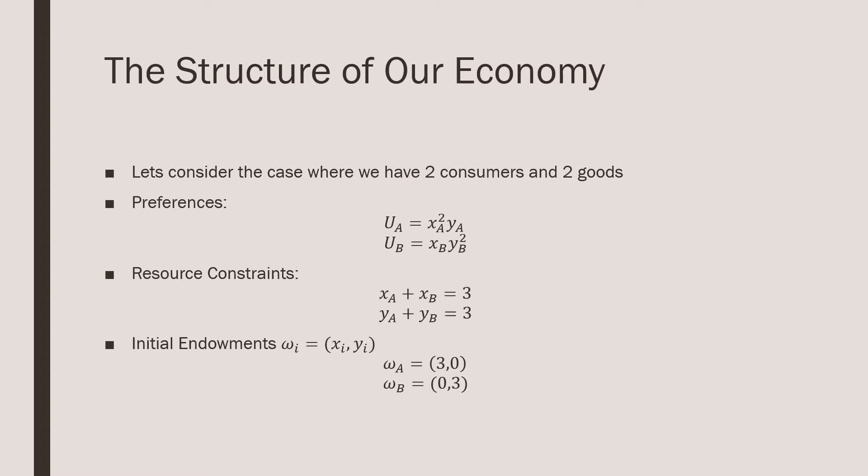Let's consider a standard 2x2 case where we have two consumers and two goods. The preferences of our consumers are given as follows. For consumer A, we have good X, or for his consumption from good X squared, times YA. And for consumer B, you have XB times YB squared.